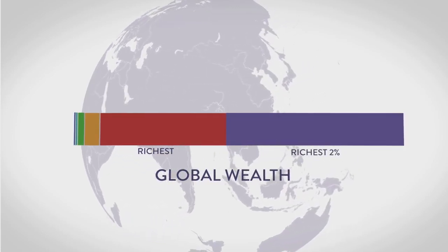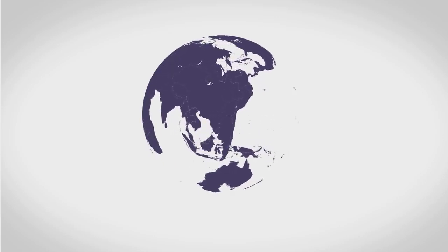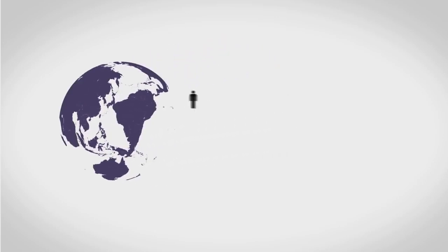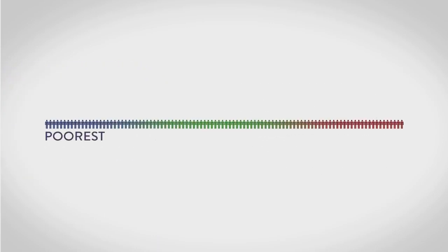Let's look at this chart another way. Let's take the whole world's population, all 7 billion of us, and reduce it to just a representative 100 individuals. Here they are, poorest people on the left, richest people on the right.